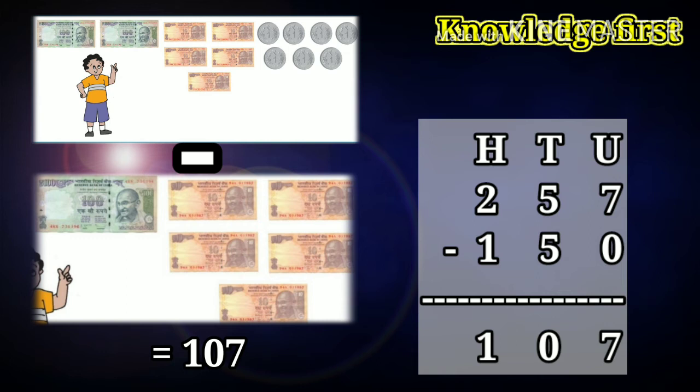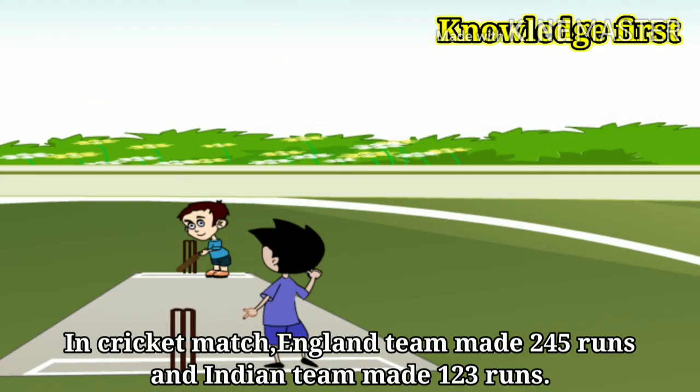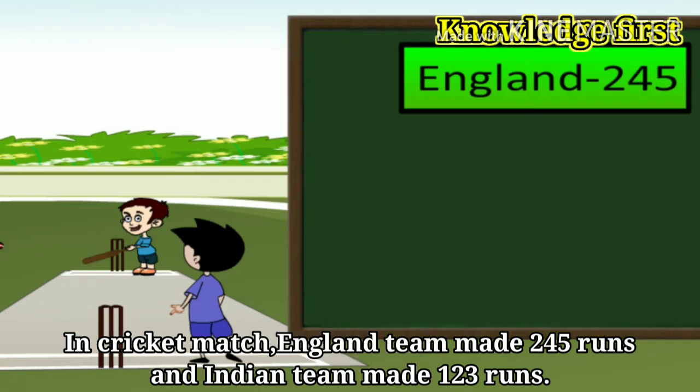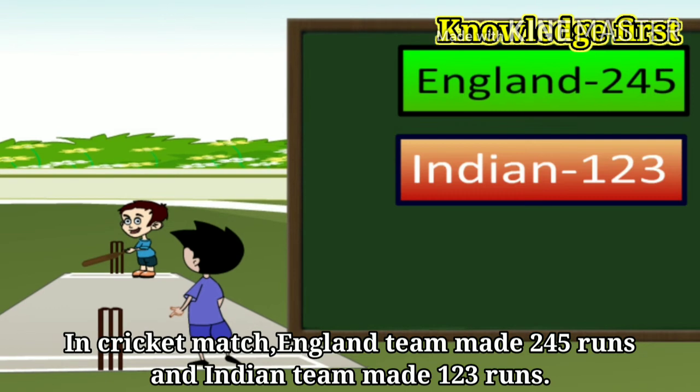So Ajit left 107 rupees only. In cricket match, England team made 245 runs, and Indian team made 123 runs.